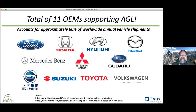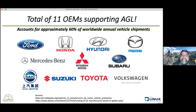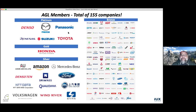That's very exciting. The 11 that we already have account for about 60% of all vehicle shipments worldwide. We have most of the Japanese OEMs — Honda, Toyota, Mazda, Subaru, Mitsubishi, et cetera. We also have Hyundai in Korea, Mercedes-Benz in Europe, Ford here in the U.S., and SAIC in China. We now have 160 members worldwide across different membership tiers.